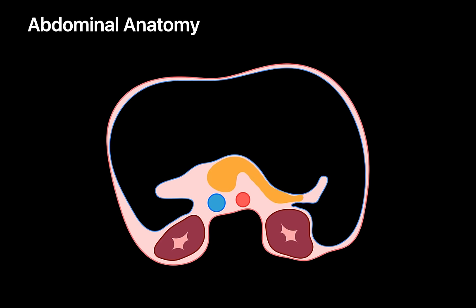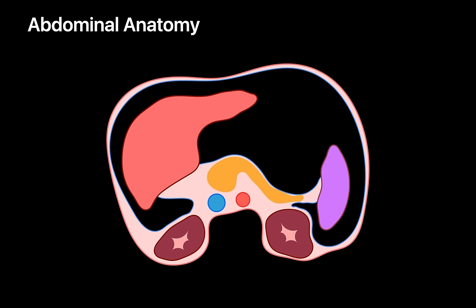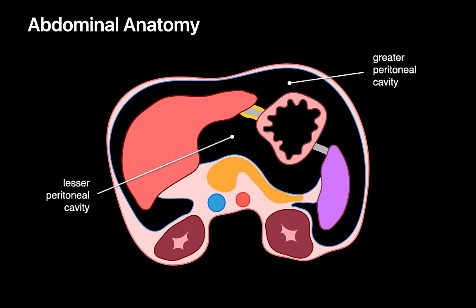Three major items live in the peritoneal cavity: the liver, the spleen, and any segments of the GI tract that don't live in the retroperitoneum — meaning the stomach, jejunum, ileum, and any segments of the colon that aren't the ascending or descending colon. In the upper peritoneal cavity, the liver and stomach are connected by the hepatogastric ligament, while the stomach and spleen are connected by the gastrosplenic ligament. These ligaments effectively divide the peritoneal cavity into a greater and a lesser peritoneal cavity.